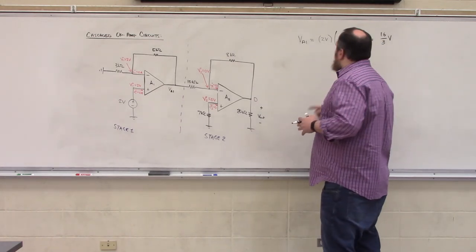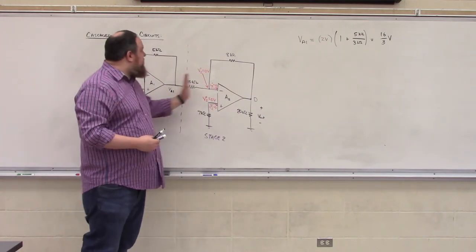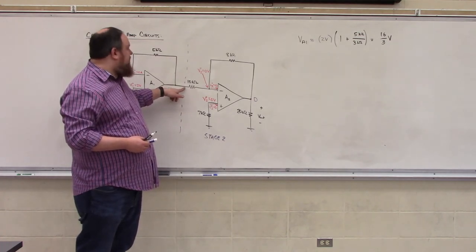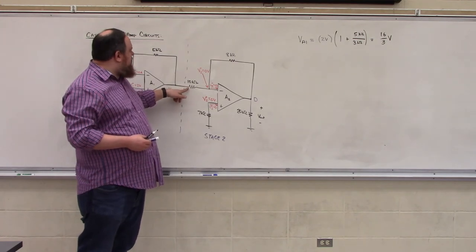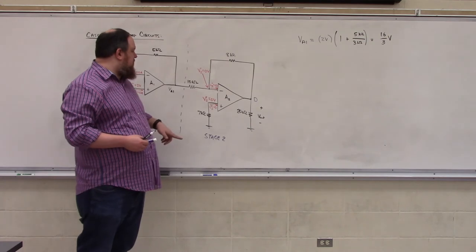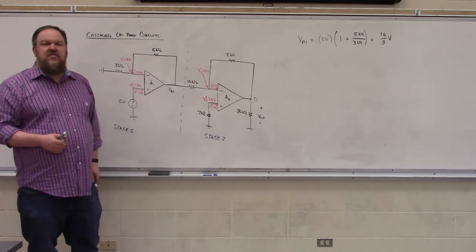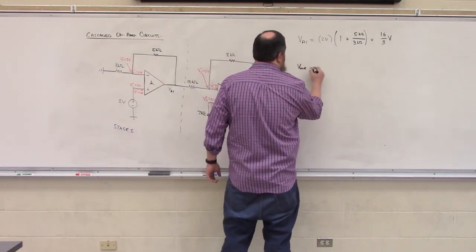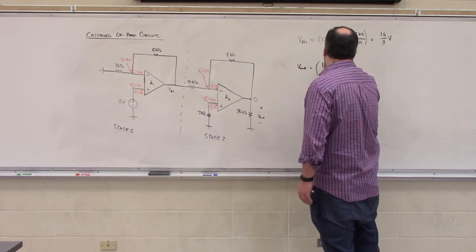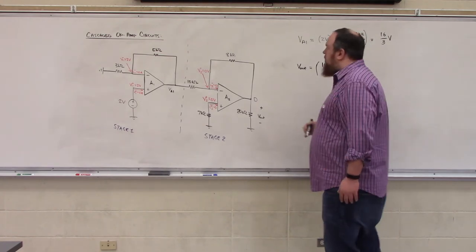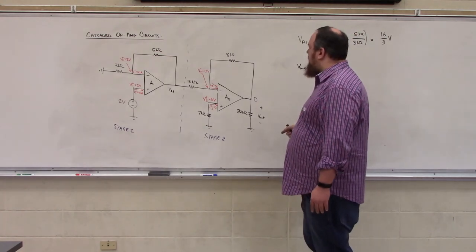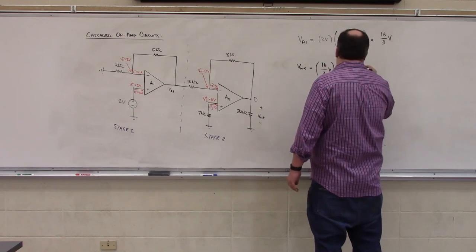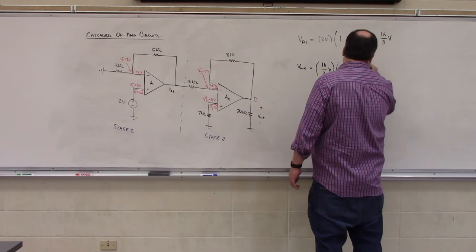Now, this voltage of 16 thirds of a volt is the input voltage for the second stage. In our second stage, we see that we have a voltage present at this node, and that voltage is going to get passed through this 10 kilo ohm resistor which is connected to the inverting terminal. So stage 2 is an inverting op amp. So what we'll find is that Vout, the output at stage 2, is our input voltage from stage 1, 16 thirds of a volt, multiplied by the gain of an inverting amplifier, which is negative R2 divided by R1, or negative 8 kilo ohms divided by 10 kilo ohms.